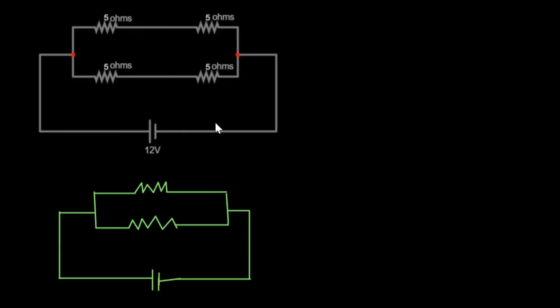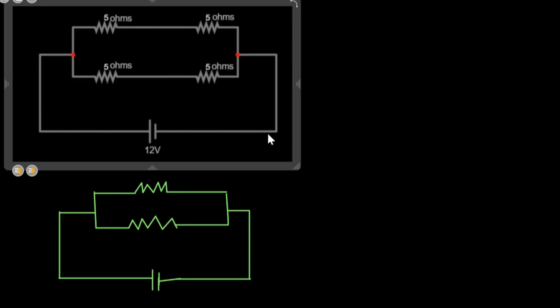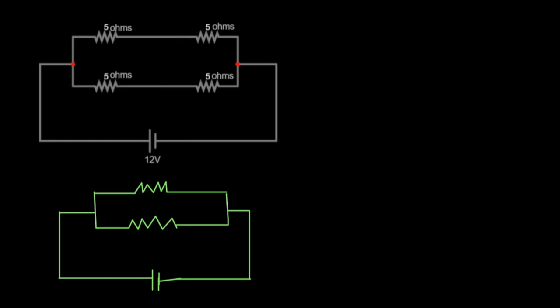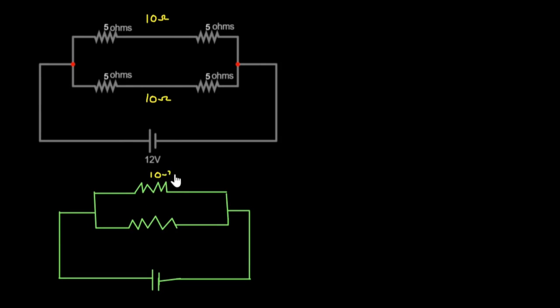So you can find the effective resistance for each pair by simply adding them: 5 plus 5 equals 10 ohms for each side. After doing this, I'll draw the simplified circuit. These two resistors become 10 ohms here, and 10 ohms here, and also 10 ohms here.